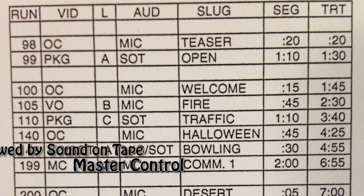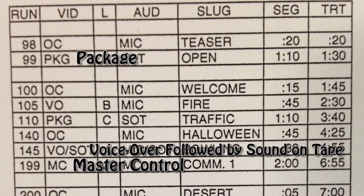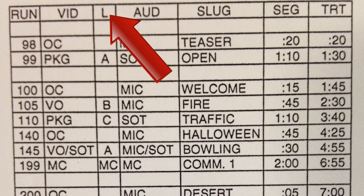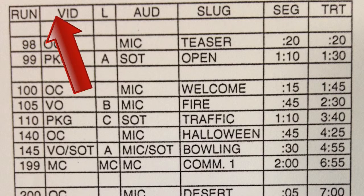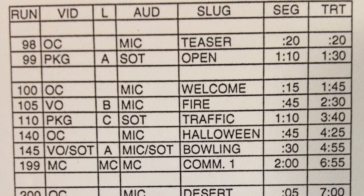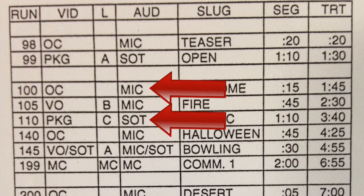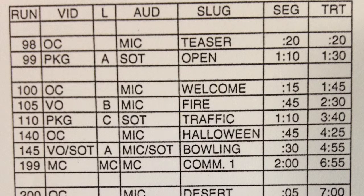Here are some other examples of video-related abbreviations. The L column indicates the location of a clip needed for the segment. The AUD column indicates the primary audio source for a segment. Acronyms are used to identify devices or audio sources, including mic and SOT, sound on tape.